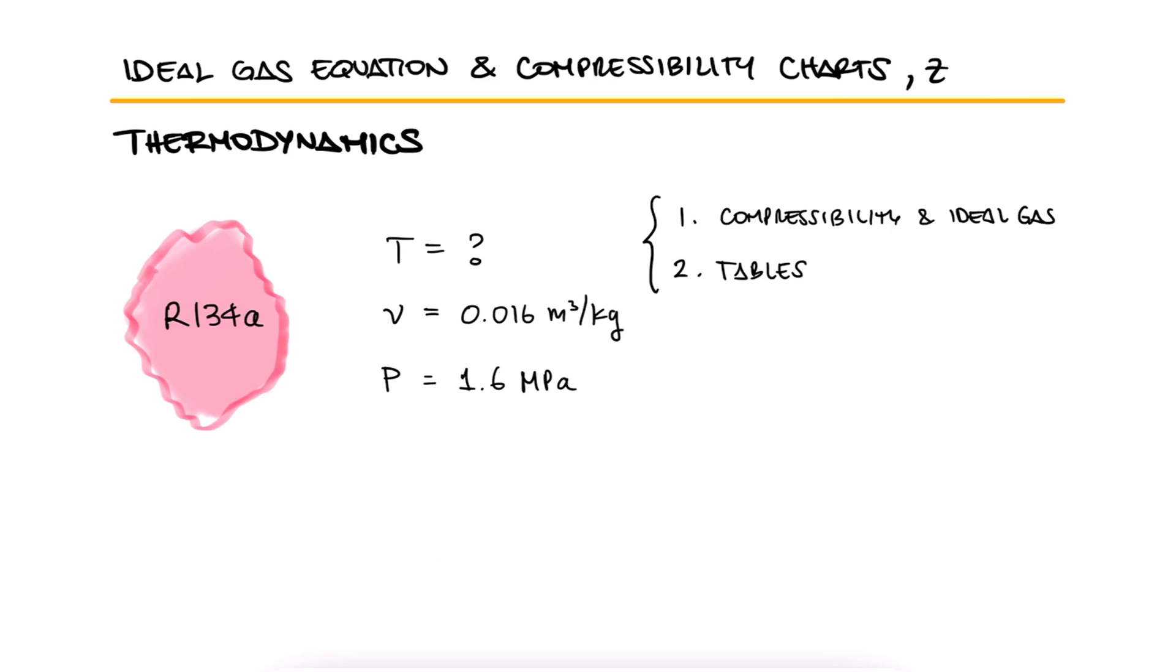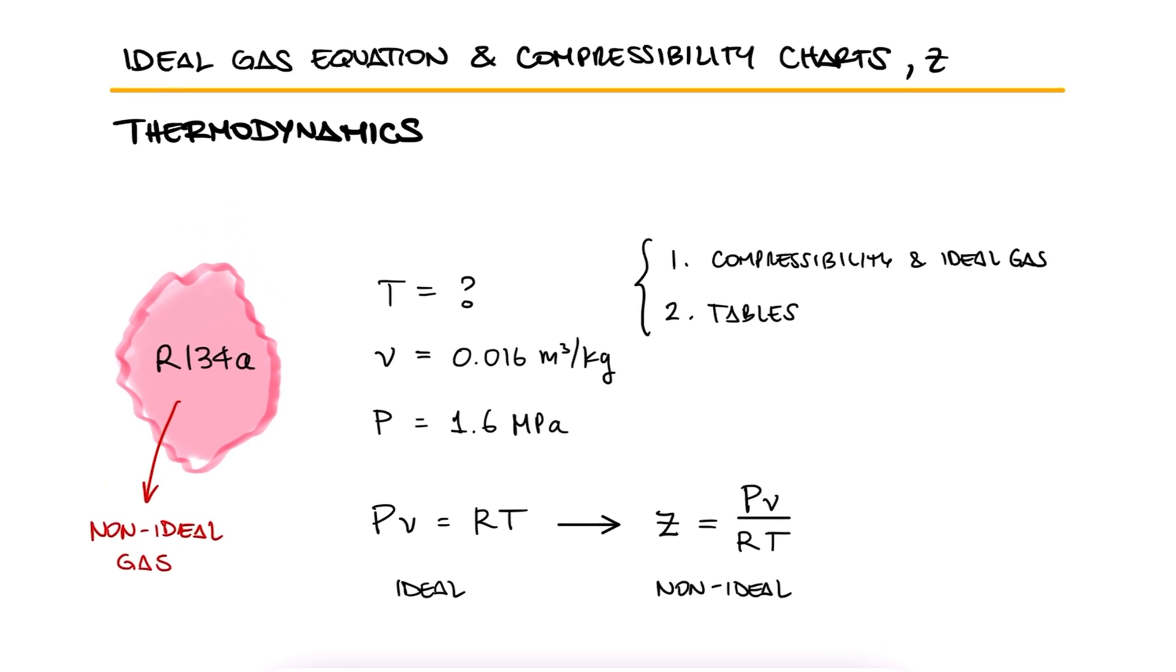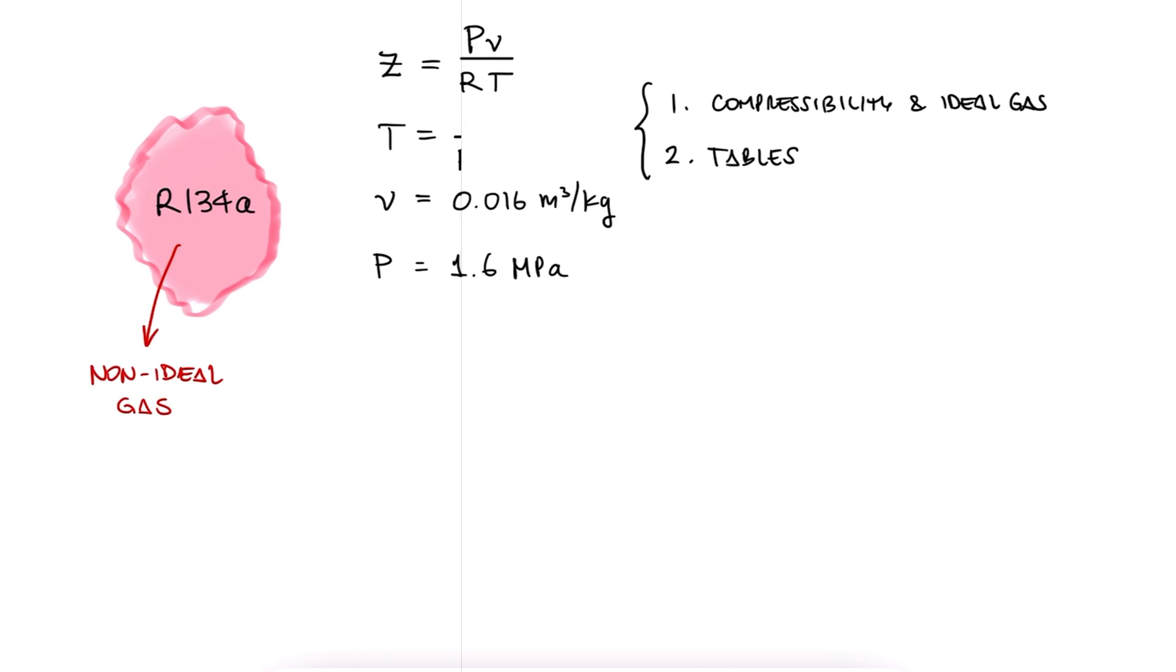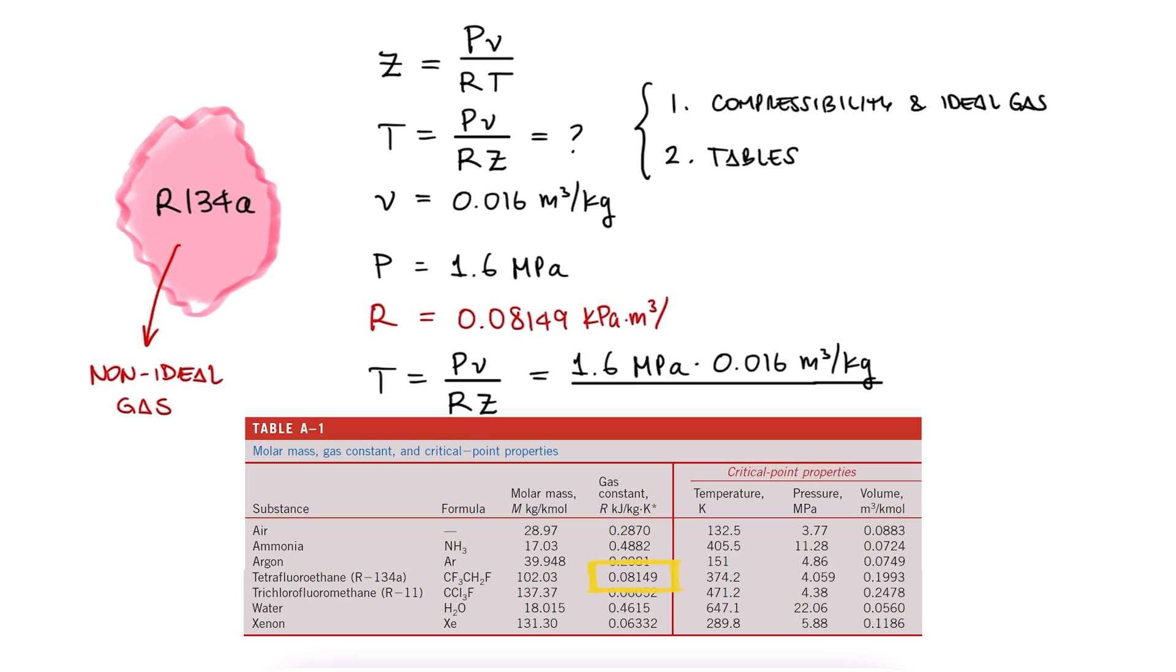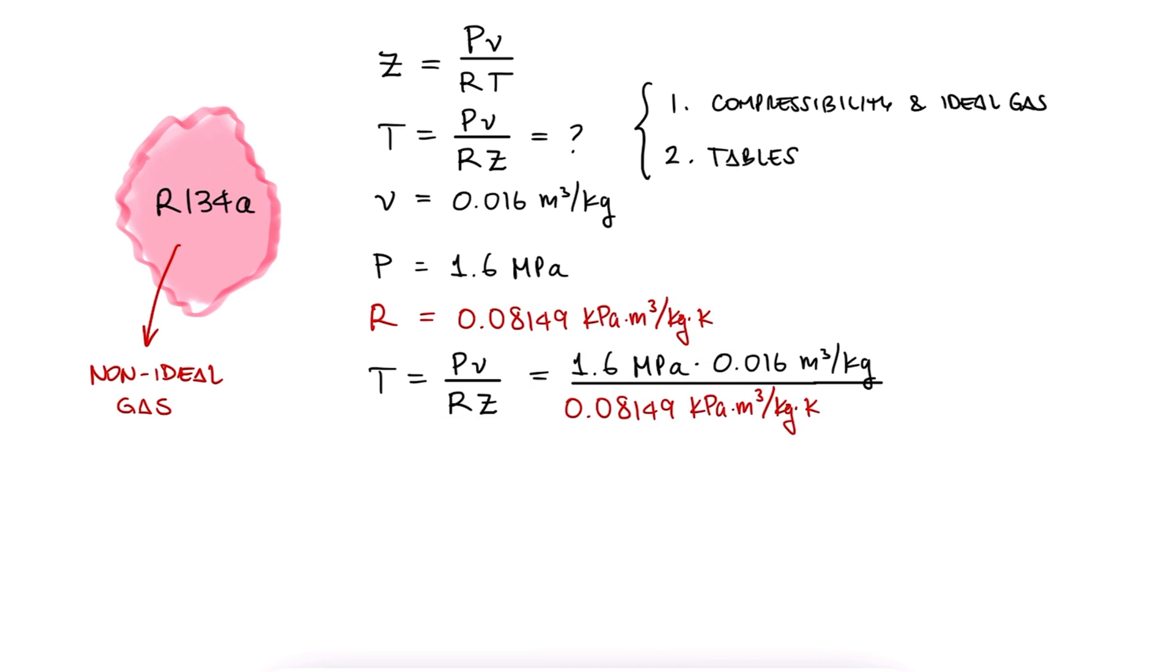Based on what we learned during the main lecture video, we can use the ideal gas equation for non-ideal gases like this refrigerant if we account for compressibility with the compressibility factor Z. This means that T equals PV over RZ. We have the pressure and the specific volume, and we can easily look up the gas constant for R134A.